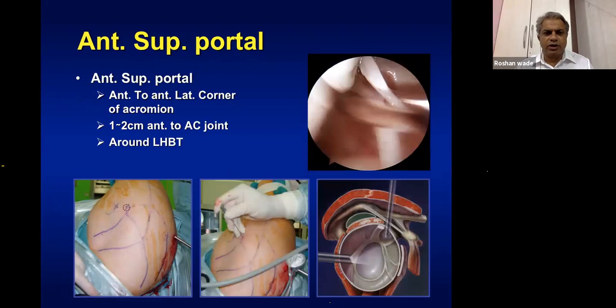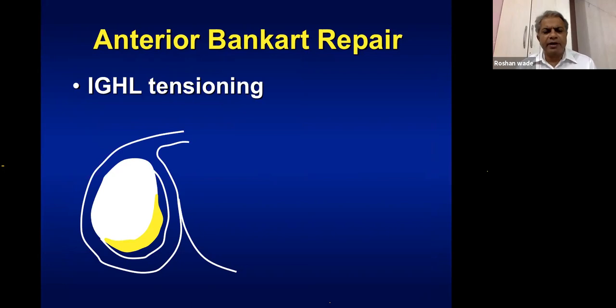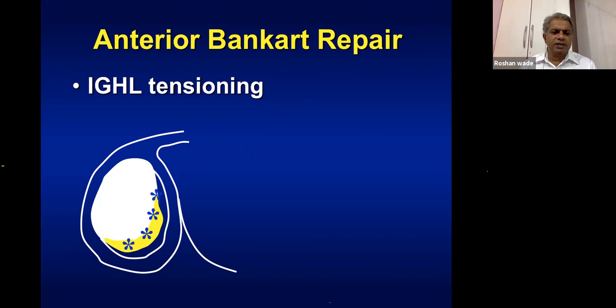The anterior superior portal is a viewing portal — the scope can be kept there while working from both the anterior and posterior portals simultaneously. It is located close to the acromion, 1-2 cm near the AC joint, and is usually in contact with the long head of biceps. In summary, the anterior Bankart repair is essentially glenohumeral inferior glenohumeral ligament tensioning — anchors are placed along the glenoid rim and tied with the labrum.